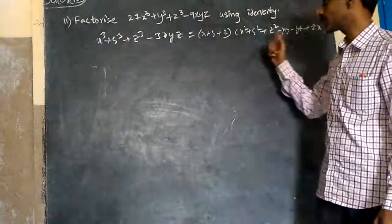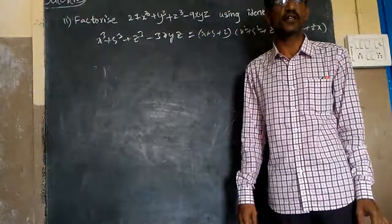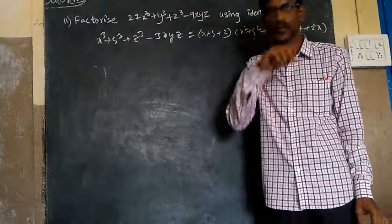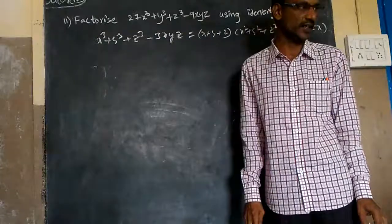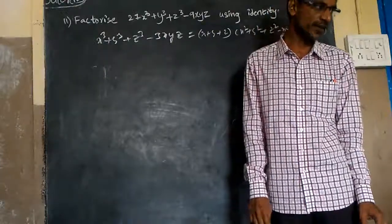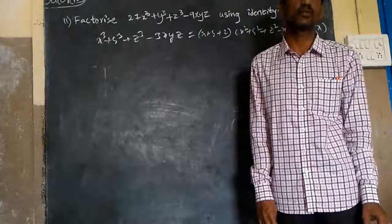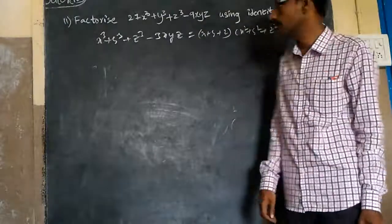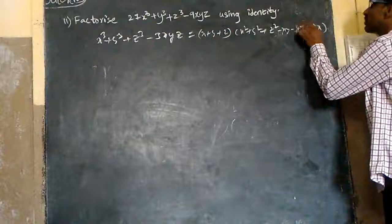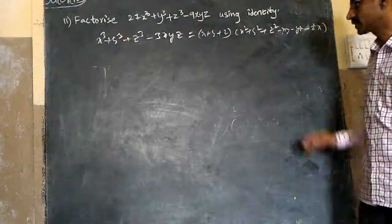When you multiply this one, you get this one: x cube plus y cube plus z cube minus 3xyz is always equal to x plus y plus z into x square plus y square plus z square minus xy minus yz minus zx. All are minus, not plus.